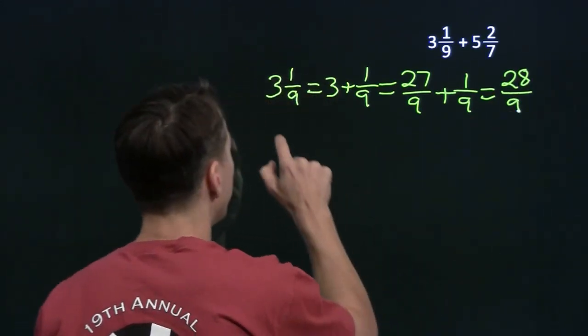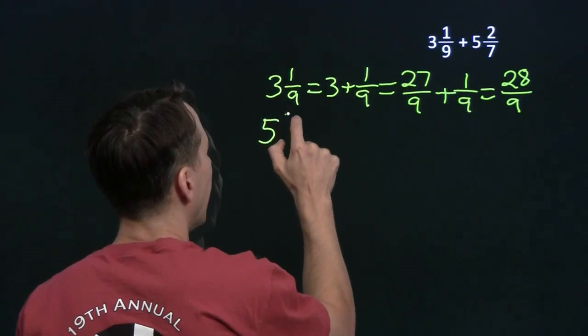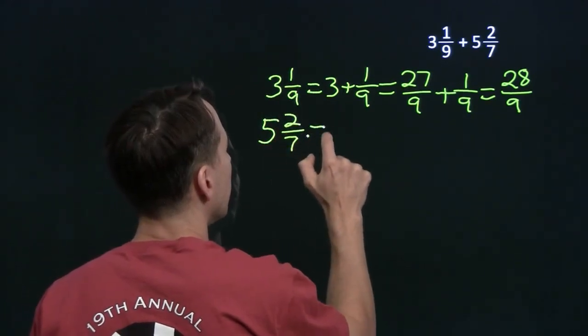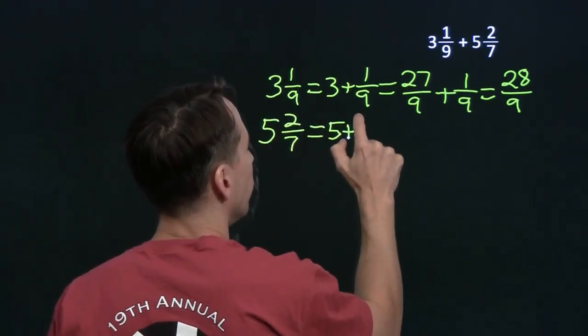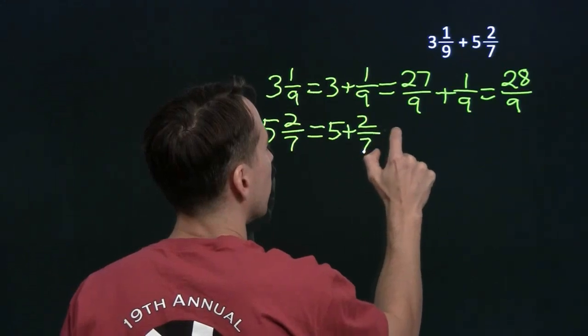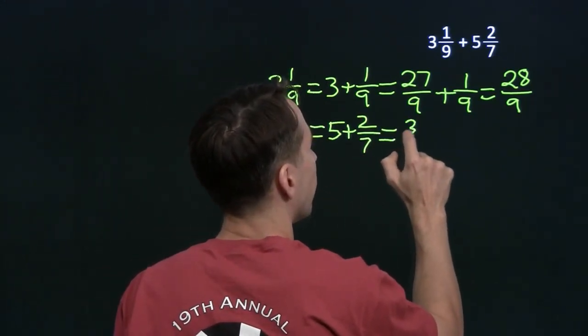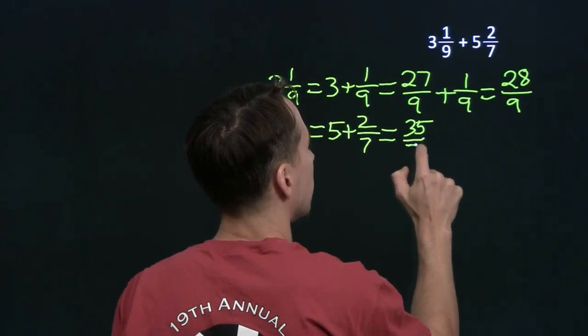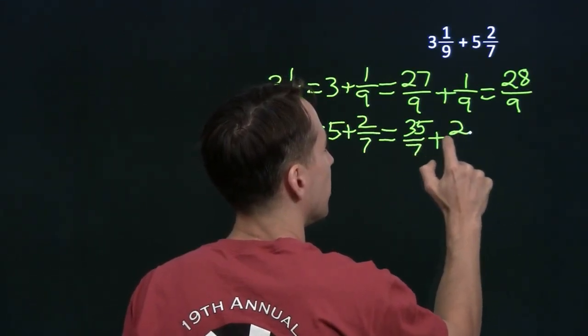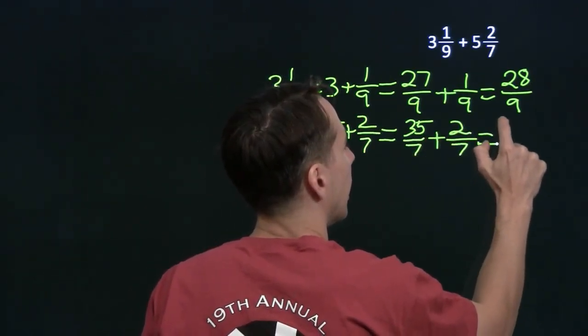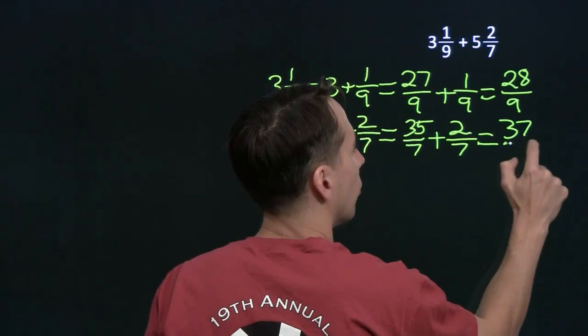And now we'll do the same thing with 5 and 2 sevenths. That's 5 plus 2 sevenths. Get a common denominator of 7. 5 is just 35 over 7, and we add our 2 sevenths, and we get 37 over 7.